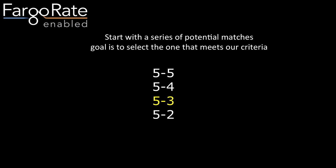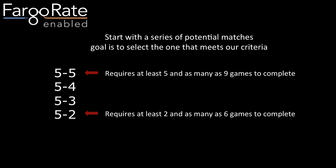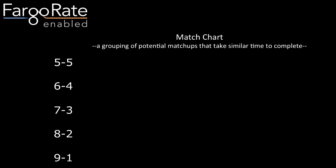Here's a way to look at the exercise we just went through. We started with a series of potential matchups — five-to-five, five-to-four, five-to-three, and five-to-two — and our goal is to select the one that meets our criteria. A five-to-five requires at least five games and as many as nine games to complete. If a game takes ten minutes, that's between 50 and 90 minutes. Compare that to five-to-two, which requires between two and six games — between 20 and 60 minutes. There's a mismatch here. So let me introduce the idea of a match chart: a grouping of potential matchups expected to take a similar amount of time to complete.